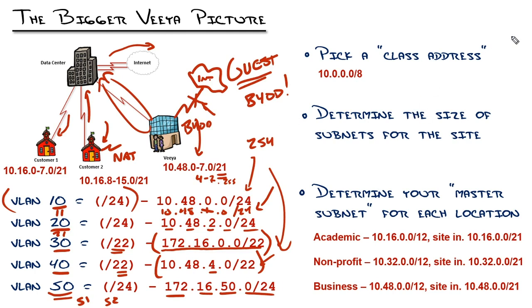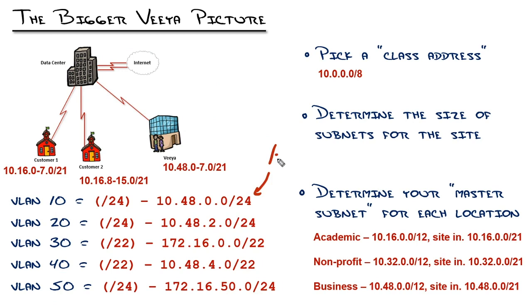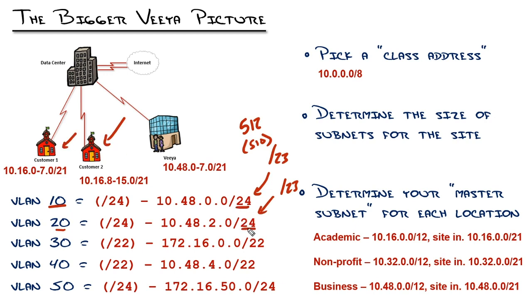Some of you might be thinking — could you have used a /23 for those subnets? Yes, I could have, and that would have given me 510 usable addresses for VLAN 10 and VLAN 20. But when I designed this scheme, I thought: what's more probable — that I'm going to end up with 500 phones at this location with our 30 employees, or that I'm going to end up with a different VLAN segment that needs different treatment or a security setting? For our businesses, there's more likely a chance we'll end up with another VLAN being created, so I gave myself that one VLAN of flexibility.